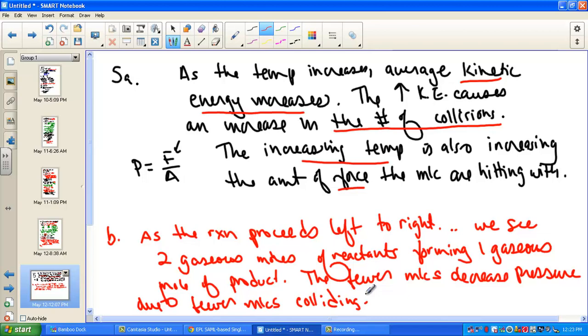So I'm sure that we've explained that very thoroughly. The reaction proceeded from left to right. The two moles of reactant gases are being converted into the one mole of product gas. That decrease in moles of the gas will cause there to be less molecular collisions and therefore a drop in pressure.